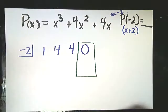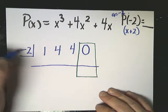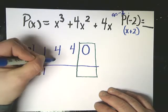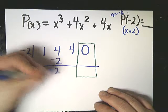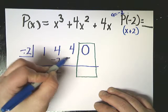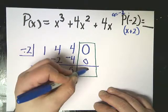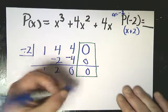is going to be your answer, because they're asking you just about the remainder, hence remainder theorem. Bring down your one. One times negative two is negative two. Four minus two is two. Negative two times two is negative four gives you zero.